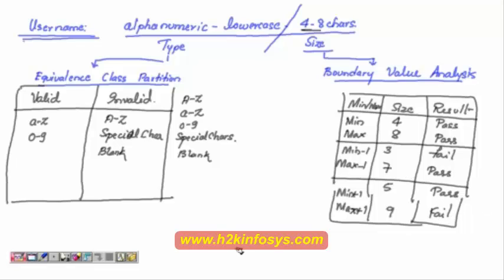So what we are doing over here? If I put it on a horizontal line, I have the minimum number of characters, the minimum boundary that is four. Maximum boundary is eight. One less, one more, one less, one more.